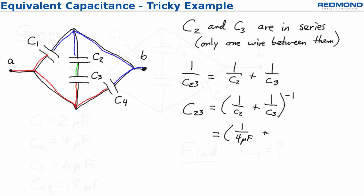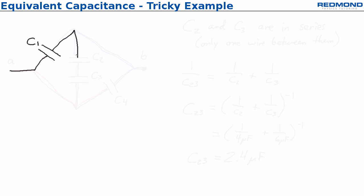Then I can substitute in and writing it this way just helps me because I can solve this faster with my calculator and the answer then is 2.4 microfarads. That's for C2,3 which is the equivalent capacitance of C2 and C3. So I can actually rewrite the circuit and draw C2,3 in the middle instead of C2 and C3 being separated.